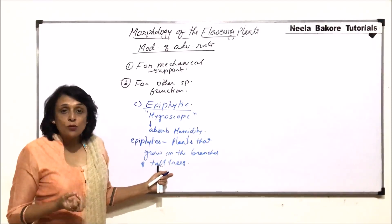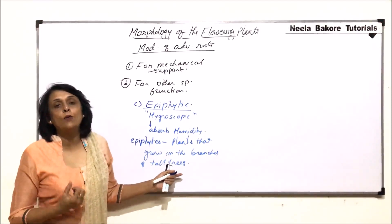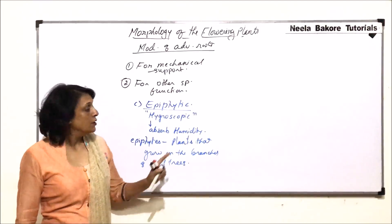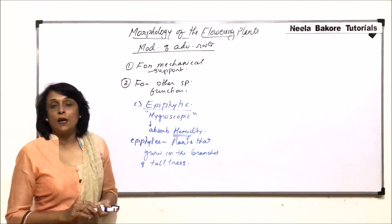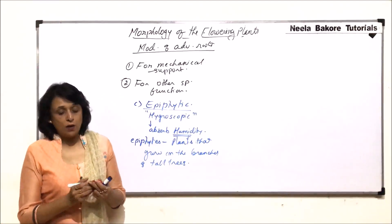Because they are on the branches of tall trees, in other words, we can say they are away from soil. So, if they are not in the soil or not attached to the soil, then how can they absorb water from soil? So, they need to absorb this atmospheric moisture, which we call humidity.